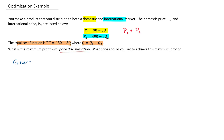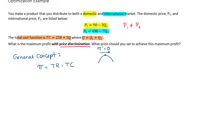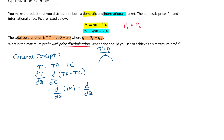This is a general concept. Profit is going to be equal to revenue minus cost. When we want to optimize profit — when we want to look for a maximum profit — we look for where the slope is equal to zero, where the first derivative is equal to zero. So if I take the derivative of profit with respect to quantity, I'm taking the derivative of TR minus TC.